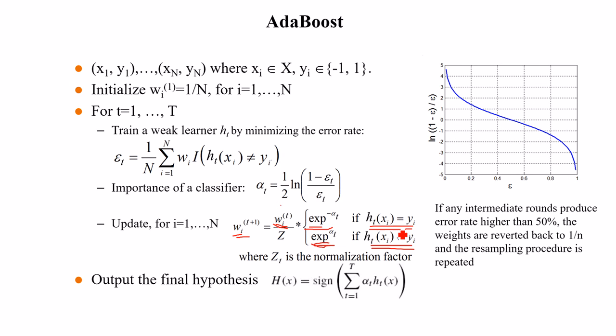Continuing through all T rounds, we end up with T trained classifiers. Given a test example x, we can then predict its class by combining the outputs of all T classifiers.